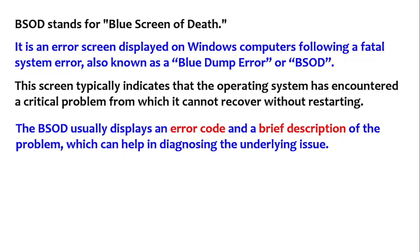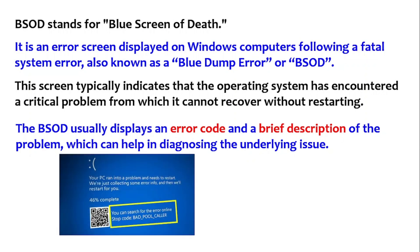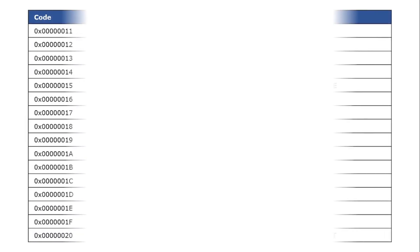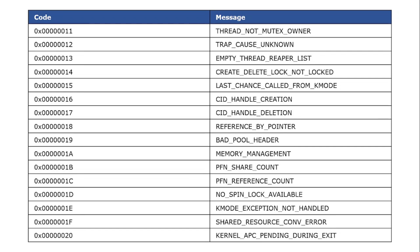BSOD always displays an error code or a brief description of the problem. In newer versions of the operating system it will only display a brief description — for example, a stop code like 'Bad Pool Caller' with no numeric error code. In earlier versions of Windows we used to see error codes like 0x0F, 0x0E, or 0x0B. These are also called stop codes or stop error codes.